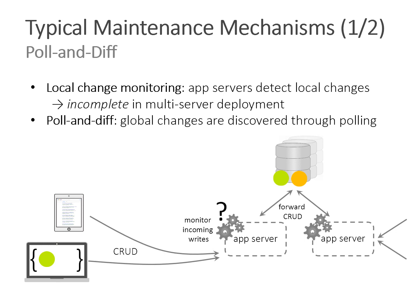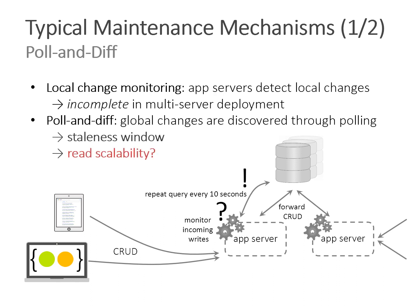The problem with poll-and-diff is that sometimes a server on the right will receive a write operation that the server on the left doesn't know about. To discover changes written by other servers, it polls active queries periodically — the Meteor default is 10 seconds — then checks whether anything changed and sends out changes accordingly. This works functionally, but you have a giant staleness window of up to 10 seconds, and absolutely no read scalability, because polling queries with many concurrent users will clobber the system.